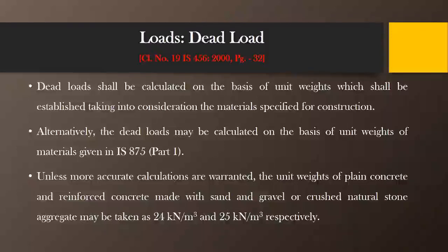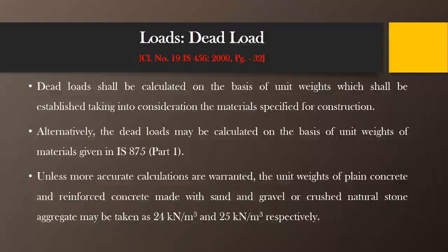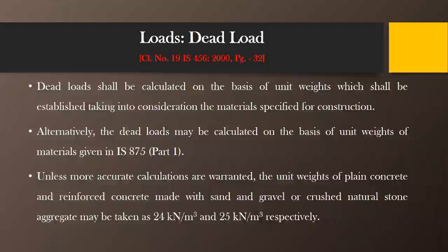Sometimes it may be possible that the unit weights need to be calculated because of the addition of some other materials — for example, in concrete we may add fly ash or other materials, so in that case there may be a change in unit weight and we have to confirm that when considering such experimentation work. Unless more accurate calculations are required, the unit weight of plain concrete and reinforced concrete made with normal river sand and gravel or crushed natural stone aggregate such as basalt aggregates may be taken as 24 kilonewton per meter cube for plain cement concrete and 25 kilonewton per meter cube for reinforced cement concrete.